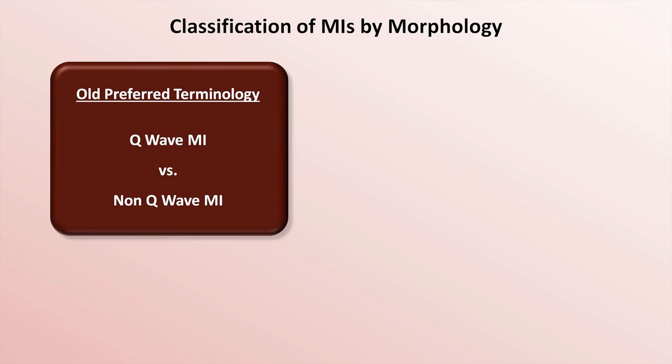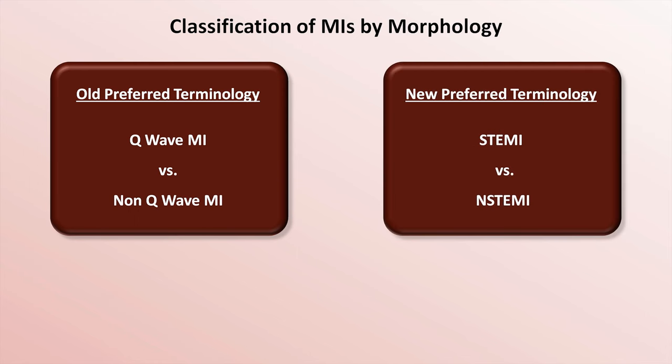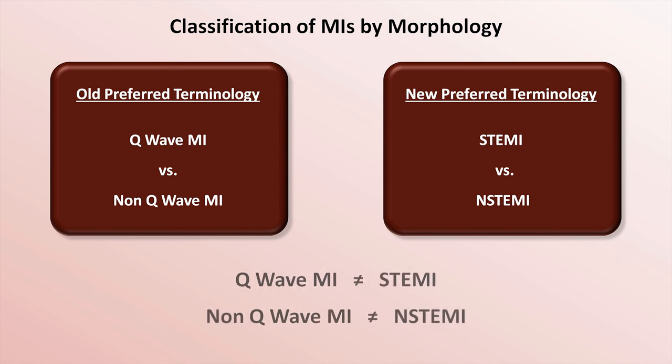You may have heard previously of the distinction between Q-wave MIs and non-Q-wave MIs. This terminology is largely obsolete, but previously referred to whether or not an MI resulted in the development of pathologic Q-waves. The terminology has since been replaced by the STEMI versus N-STEMI distinction. Occasionally someone explains those terms by stating that a STEMI is the new word for a Q-wave MI and an N-STEMI is the new word for a non-Q-wave MI — this is absolutely not true. Both STEMIs and N-STEMIs alike may or may not result in Q-waves.